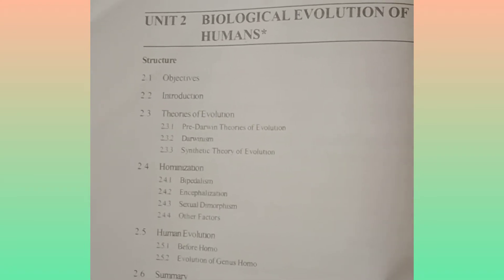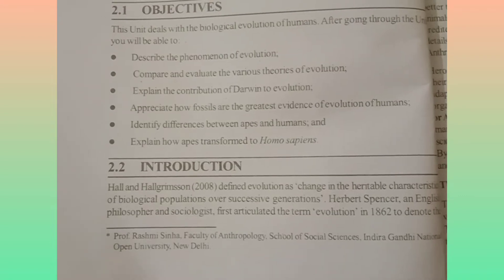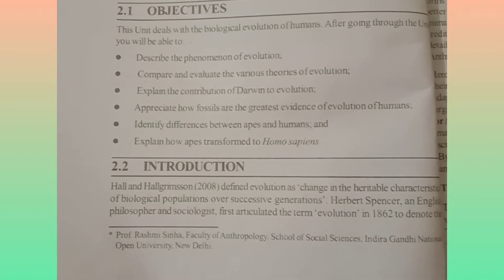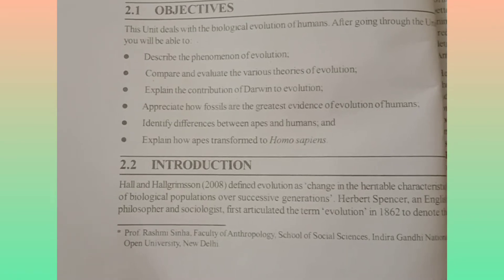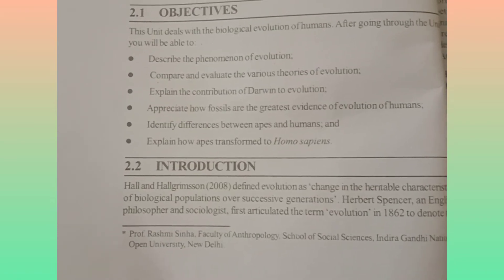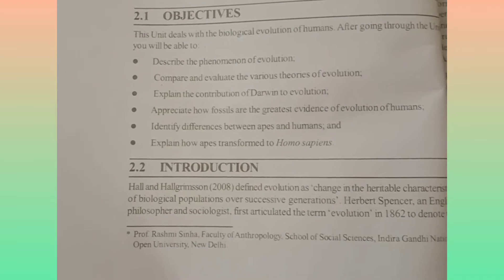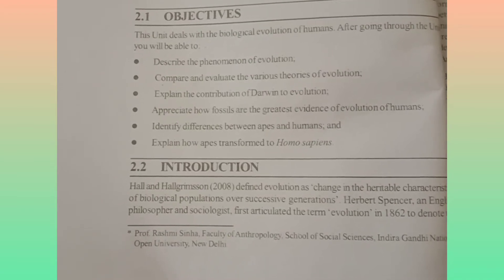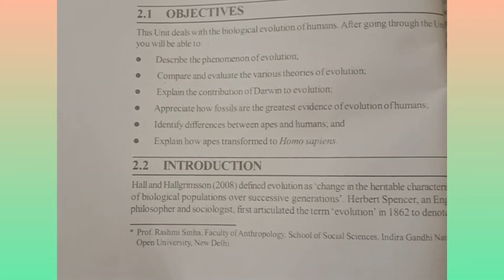In the introduction, it is called Hall and Hall Grimson in 2008. It is called the Biological Population and Successive Generations, relating to the Biological Evolution of Humans in chapter 2.